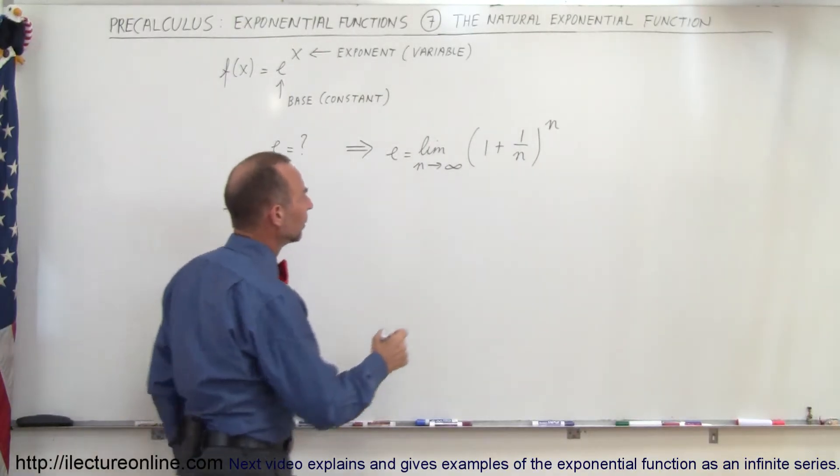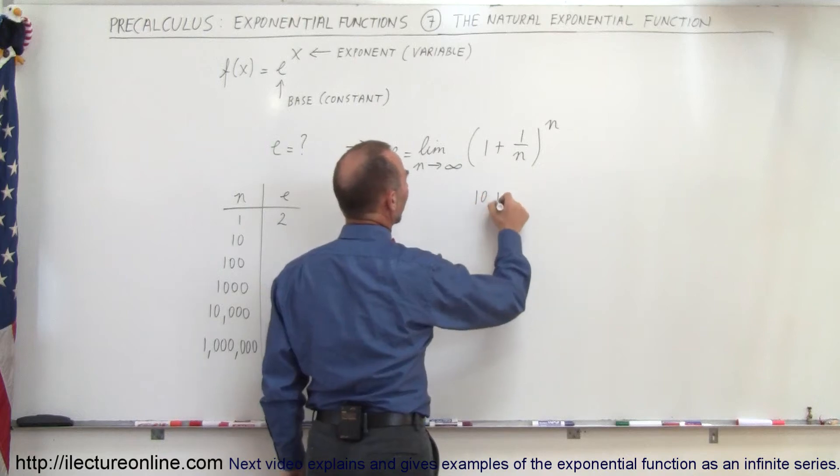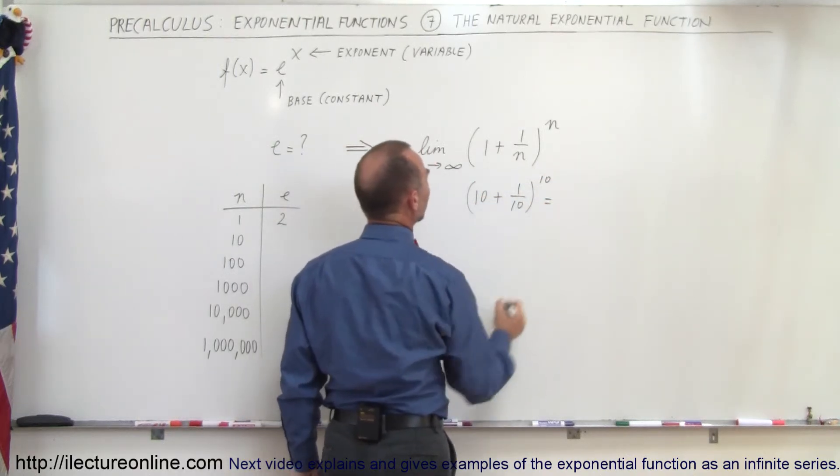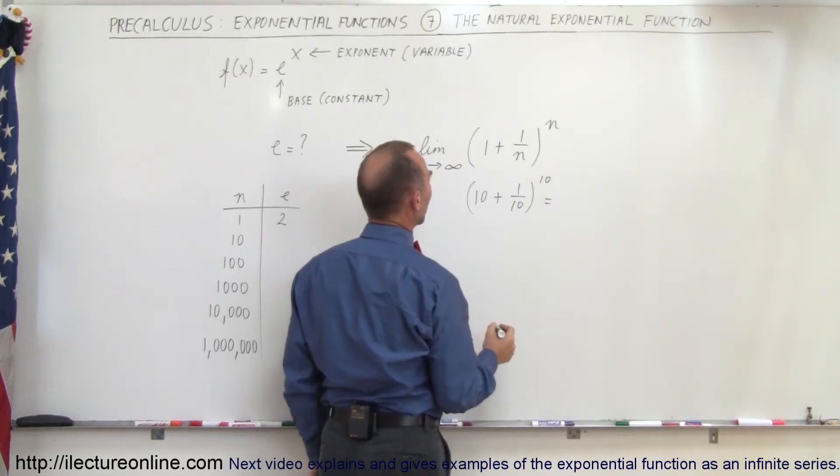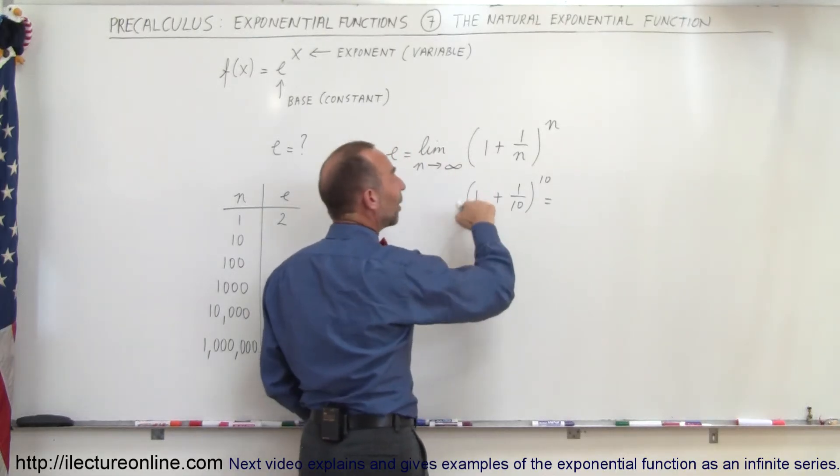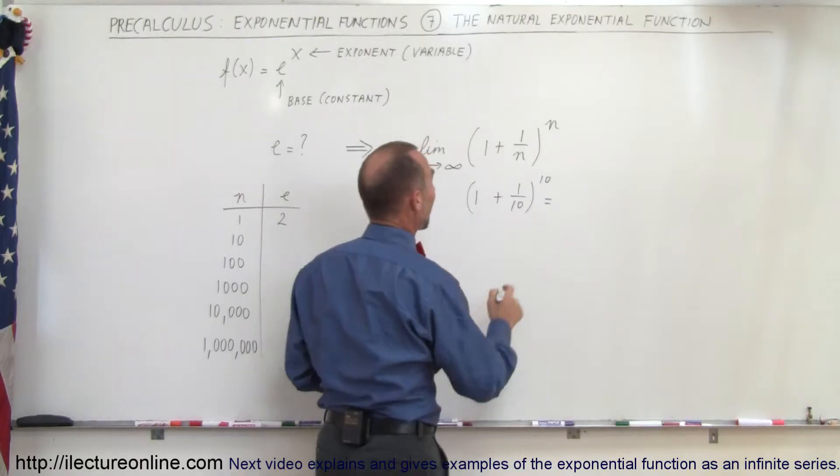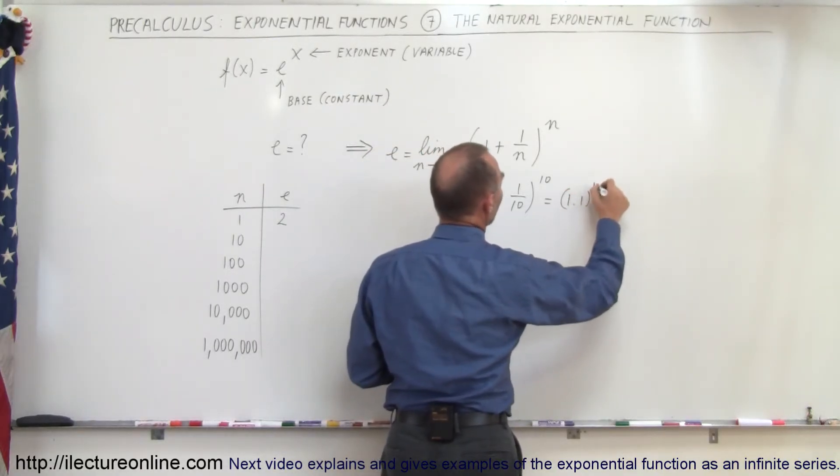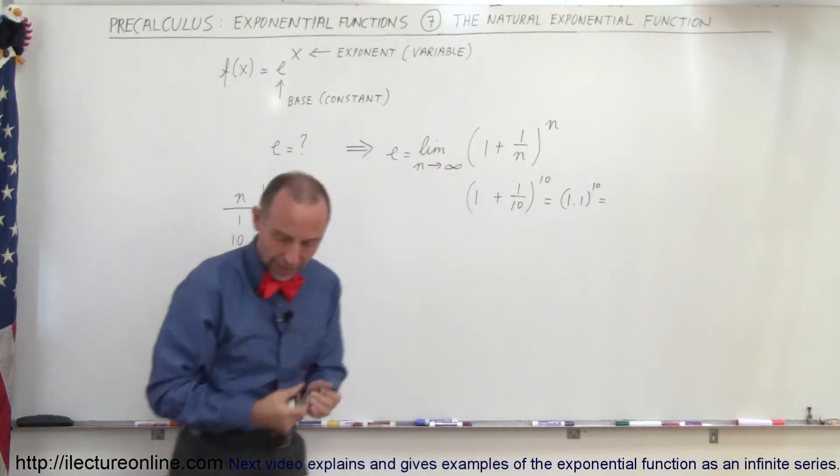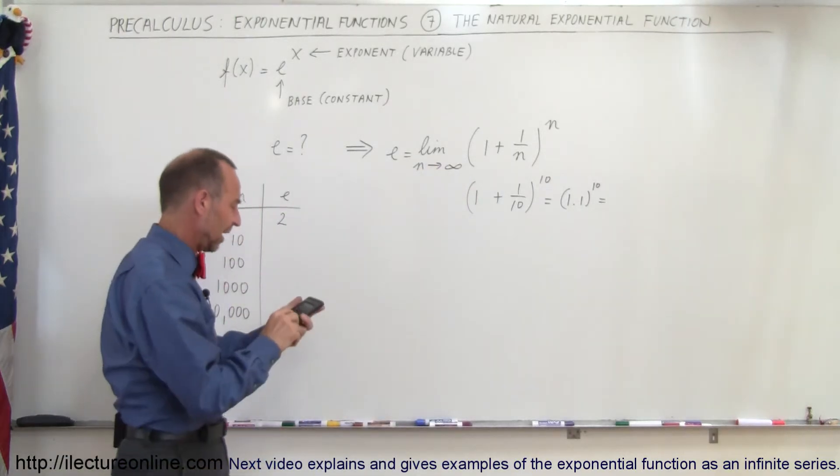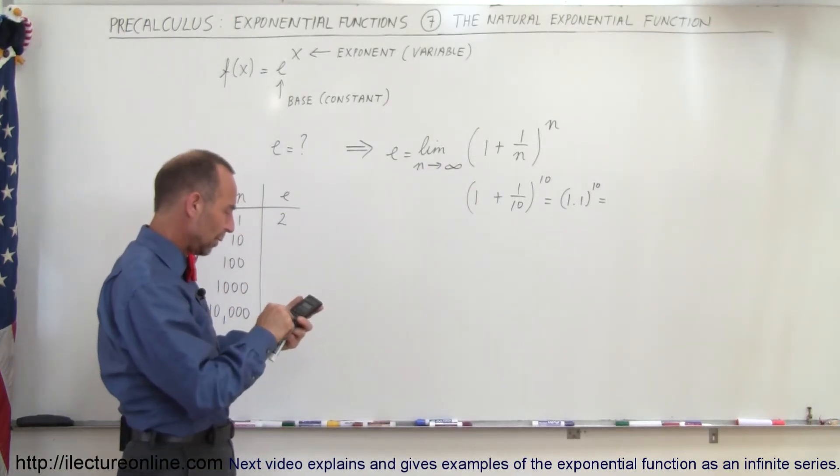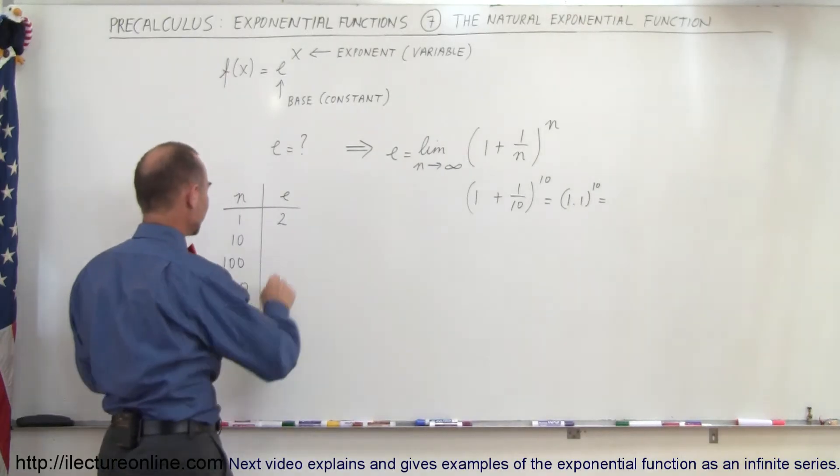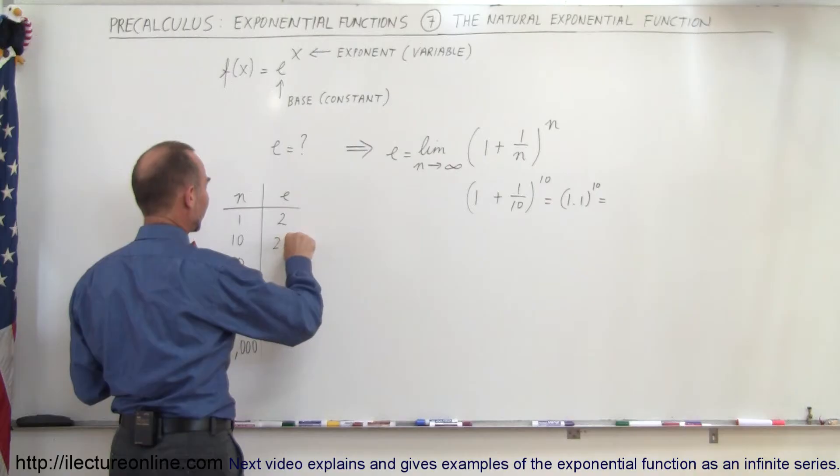What if n is equal to 10? Well, 1 plus 1 over 10 raised to the 10 power is equal to 1.1 raised to the 10 power. Well, let's see what we get when we do that. Again, we need a calculator for that. So 1.1 raised to the 10 power is equal to 2.59.